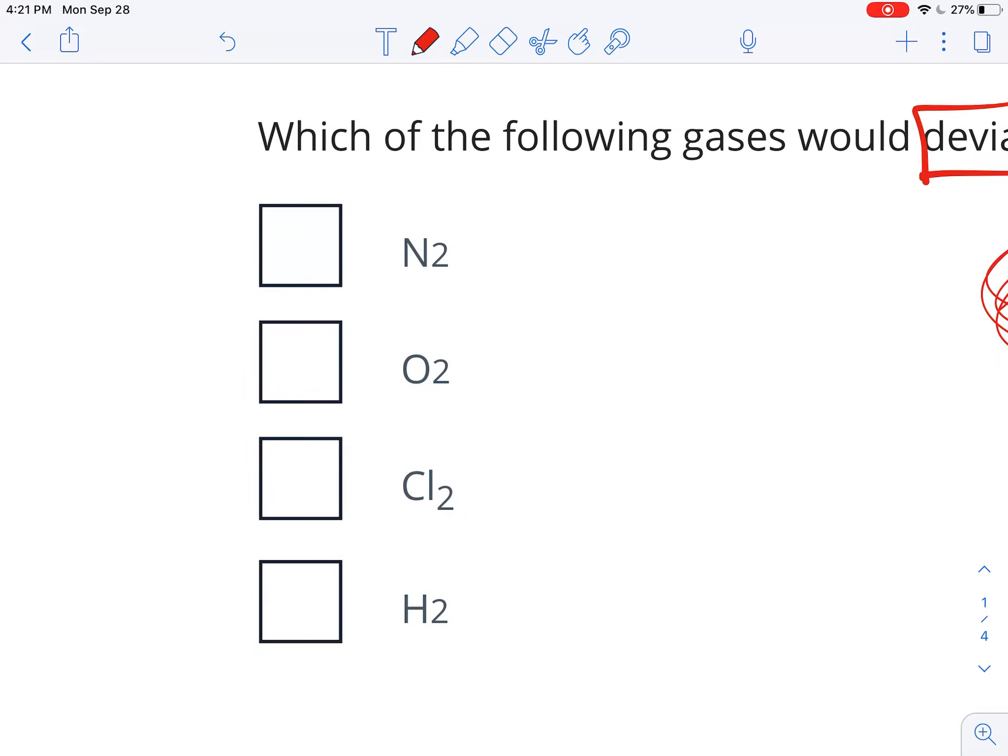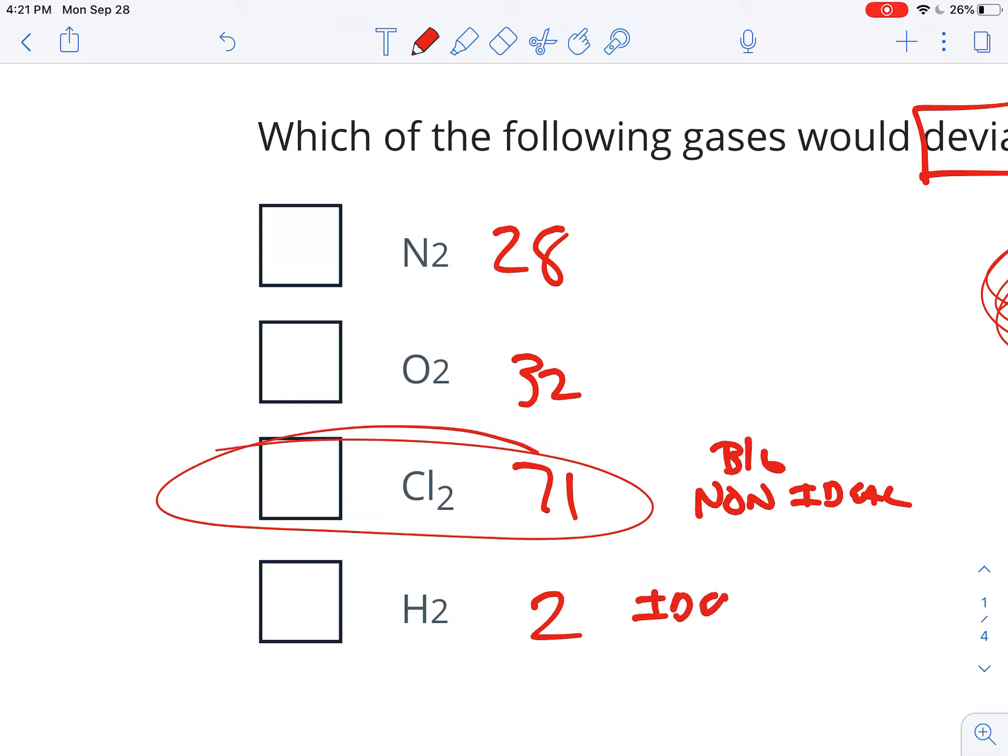So add up the masses and the biggest one is the most non-ideal. So that's 2, 71, 32, and 28. So chlorine is going to be the most non-ideal. This is the most non-ideal because it's the biggest. Hydrogen is the most ideal because it's the smallest. But it's looking for the one that's the non-ideal, so that would be the chlorine.